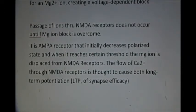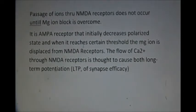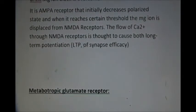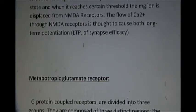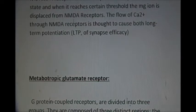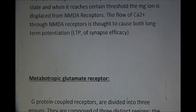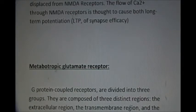In the beginning it is the AMPA receptor that depolarizes the NMDA receptor, and when it reaches a certain level it displaces the magnesium ion from blocking the NMDA receptor. So the NMDA receptor needs the help of the AMPA receptor to start with. Once the magnesium block is removed, the flow of ions — sodium, potassium, and calcium — through the NMDA channel occurs, causing depolarization. The flow of calcium through these receptors causes long-term potentiation.